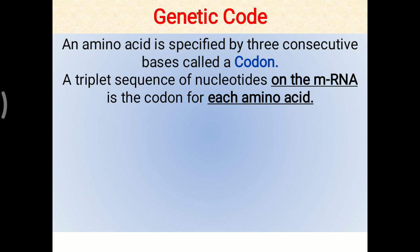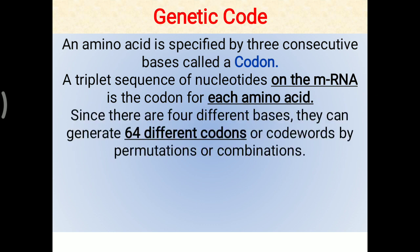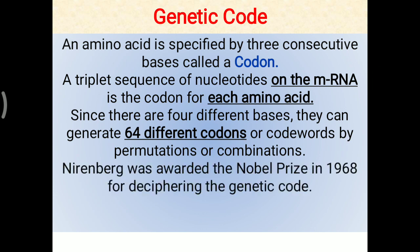Each codon codes for an amino acid. Since there are four different nitrogenous bases present in RNA, they can generate 64 different codons — also called code words — by permutation and combination. Adenine, guanine, cytosine, and uracil are present on the mRNA, and these make 64 different codons.